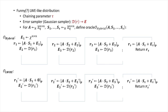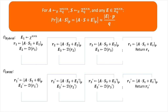The first chain—the rounding of A times S1—is essentially an LWR sample. We are chaining an LWR sample with a sequence of LWE samples. This is why we refer to this oracle as the LWRE oracle, which stands for Learning with Rounding and Errors.